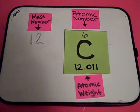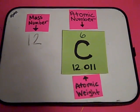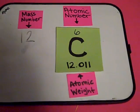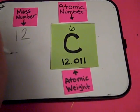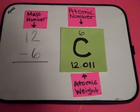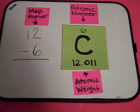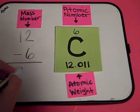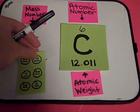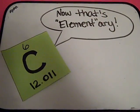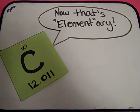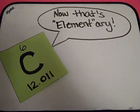Remember, the amount of protons is given by the atomic number. In this case, we would subtract six. Therefore, twelve minus six gives us six neutrons in the nucleus. Neutrons have no charge. And there you have it — that's how to read an element on the periodic table of elements in plain English.